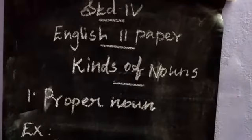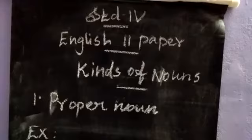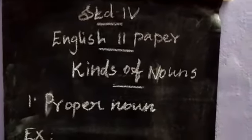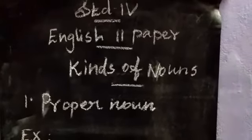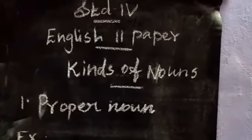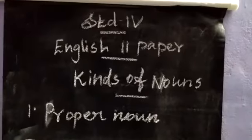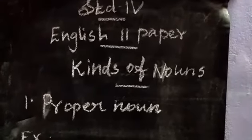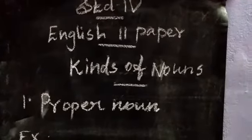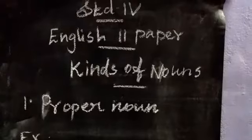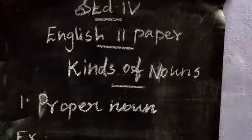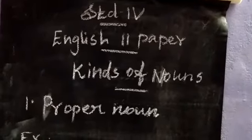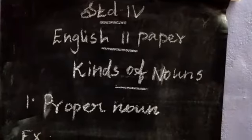What are nouns? Nouns are the name of people, places, animals and things. Soldier, library, elephant, book — all these names are called nouns. A noun is a naming word.